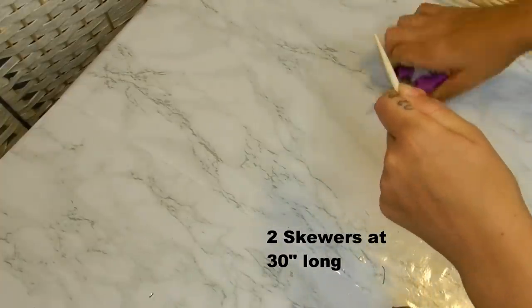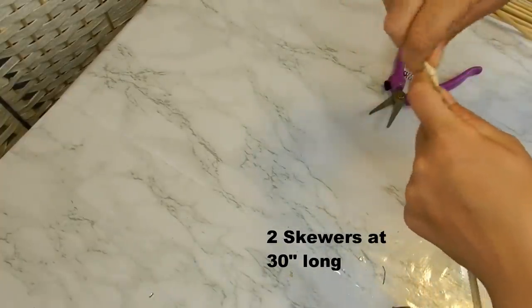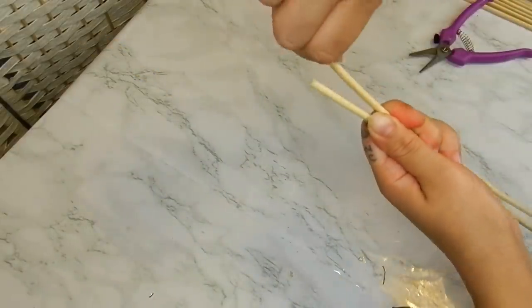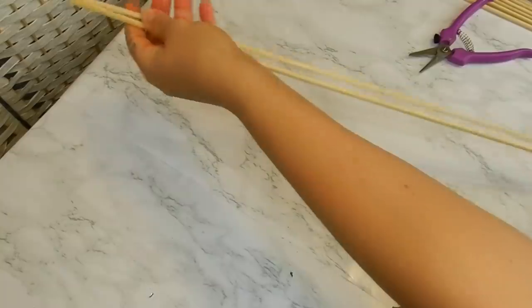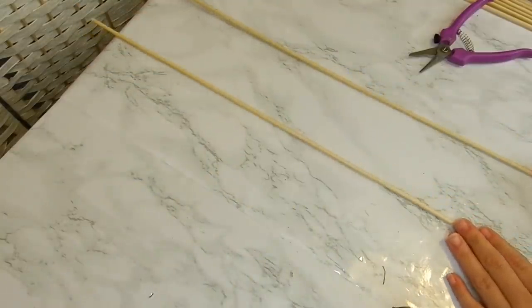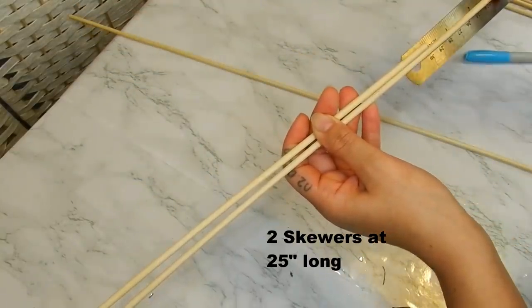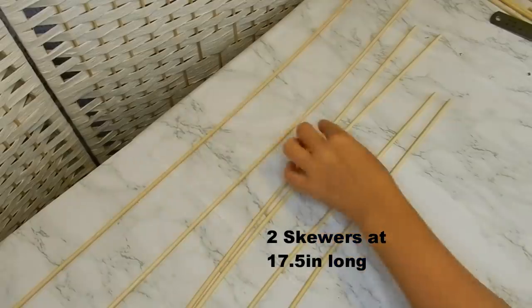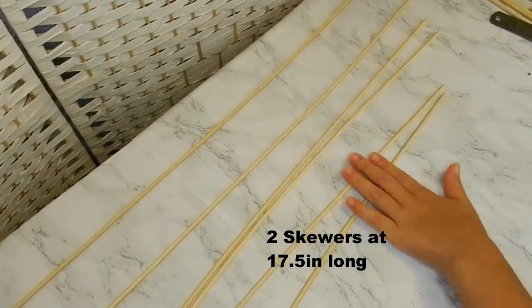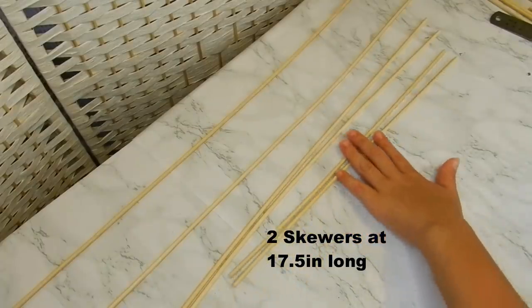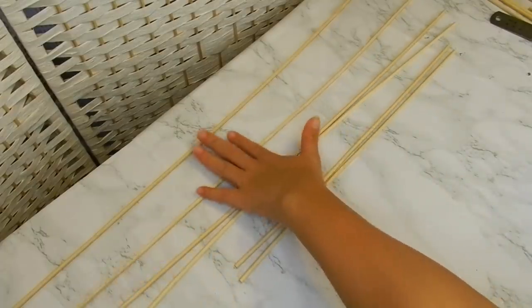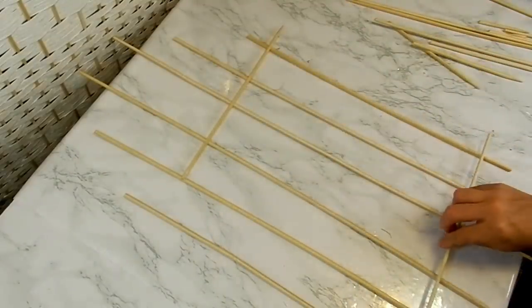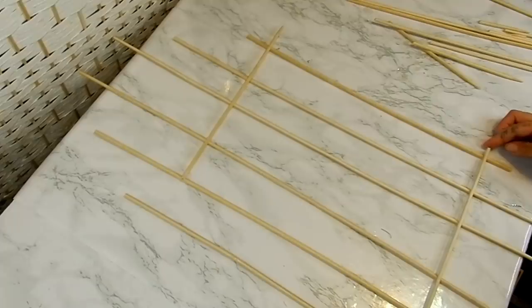So I'm going to paint two of these and they will be about 30 inches long, two skewers at 25 inches, and then my third set of skewers will be at 17.5 inches. This will be the base for my wall decor. Now I'm going to be taking my scrap pieces and I'm just going to be laying those down.